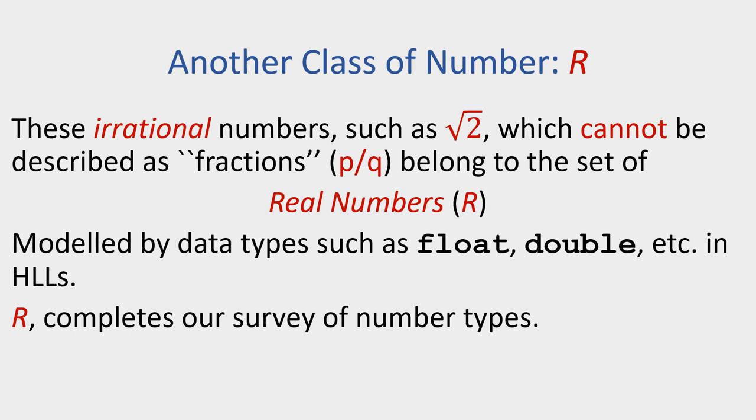This class of values, for the moment, completes the collection of number types that we're going to need for the time being. Later on in the module we're going to see another class of number types. The motivation for that class is going to arise from something we're going to be looking at in the next lecture: a refinement of this notion of irrational numbers and a more detailed treatment of this notion of the square root of 2.